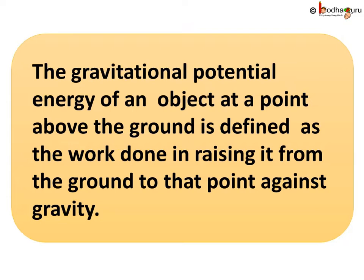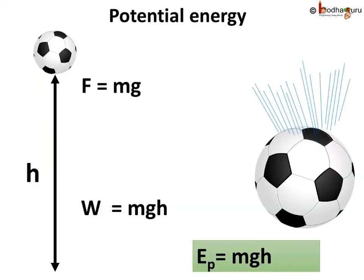And what is the formula for potential energy? The potential energy of the object is given by the formula Ep = mgh, where m is the mass of the body, h is the height, and g is the acceleration due to gravity.